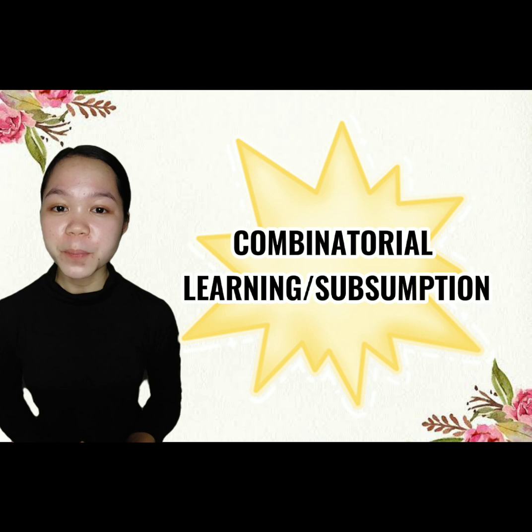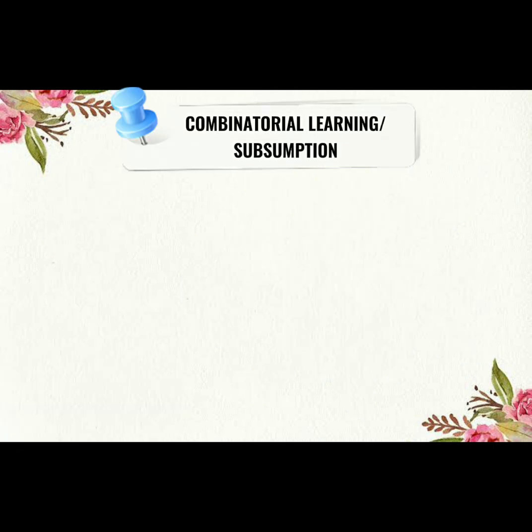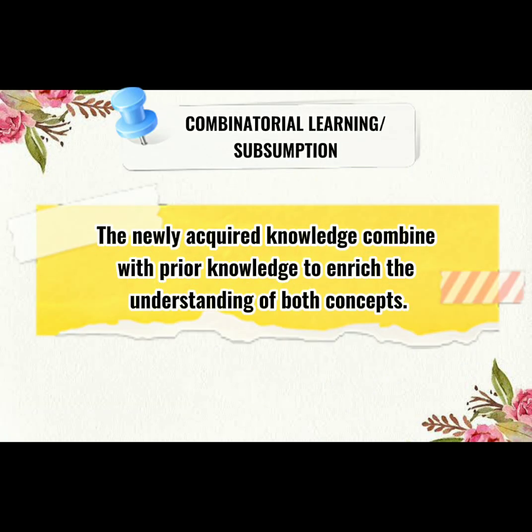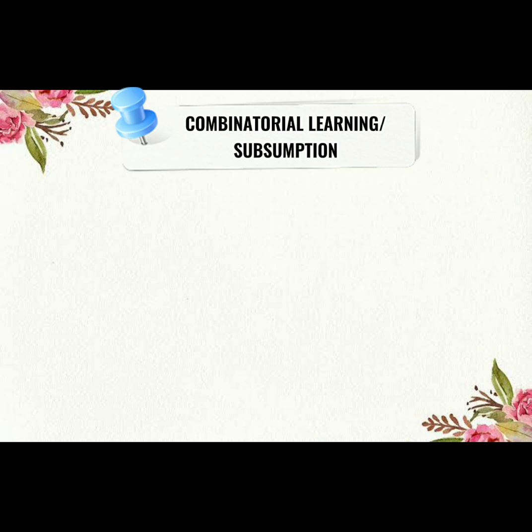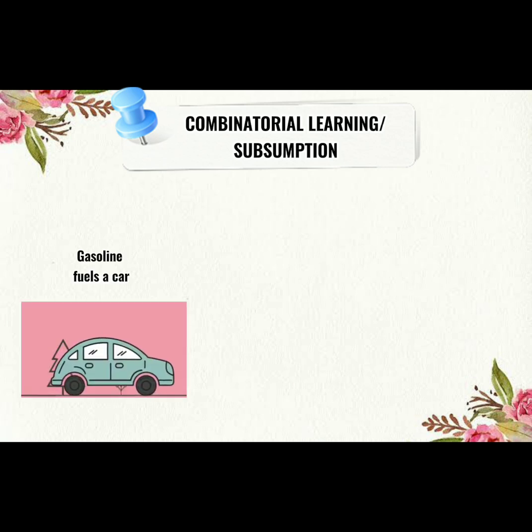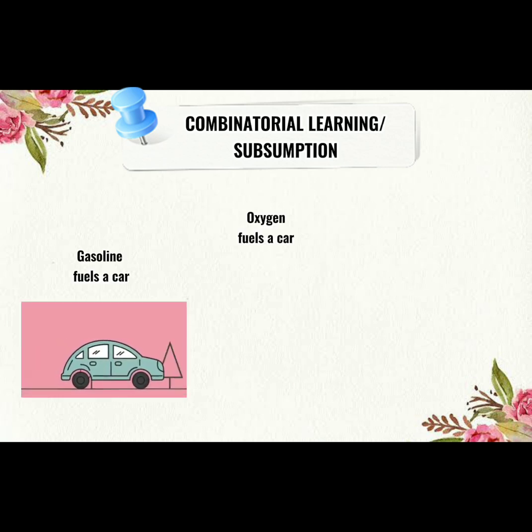Let us proceed to the last process, which is combinatorial learning. In combinatorial learning, the newly acquired knowledge combines with prior knowledge to enrich the understanding of both concepts. For example, to teach someone about how humans get energized throughout the day, suppose he or she already knows that because of gasoline, a car is able to move,